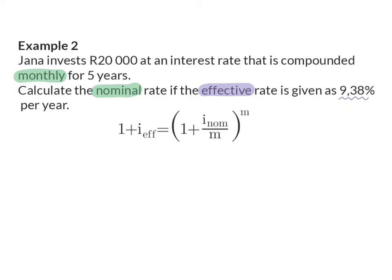Even though here we are given an amount and a number of years, we want to calculate the nominal rate. We are going to focus only on the rates and how they are compounded. The effective rate is given as 9.38%, which we write as a decimal. The nominal rate is what we want to calculate, and we are told it is compounded monthly, so the number of periods per year M is 12, which is also our exponent.